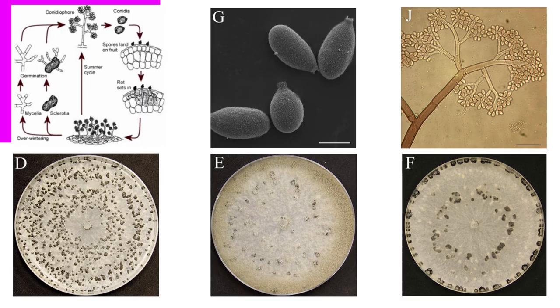Botrytis cinerea enters the cell through a special structure called an appressorium, secreting enzymes that degrade both the waxy outer layer and the cellular structure within.